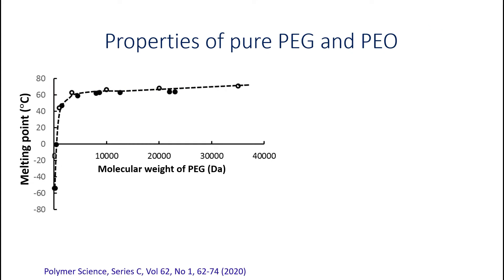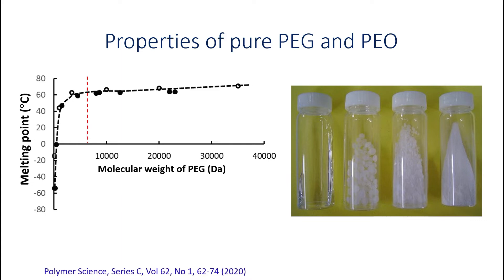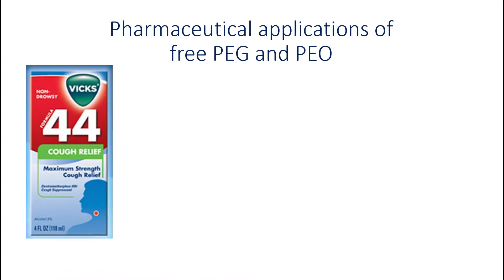The dependence of the melting temperature of polyethylene glycol on its molecular weight is shown in this figure. When PEG is oligomeric, it shows an increase in the melting point with the growth of its molecular weight. However, above a certain molecular weight, the melting point no longer changes, and this is when PEG is considered to have true polymeric properties. Depending on the molecular weight, ethylene oxide polymers can be colorless liquids, waxy, or solid materials.